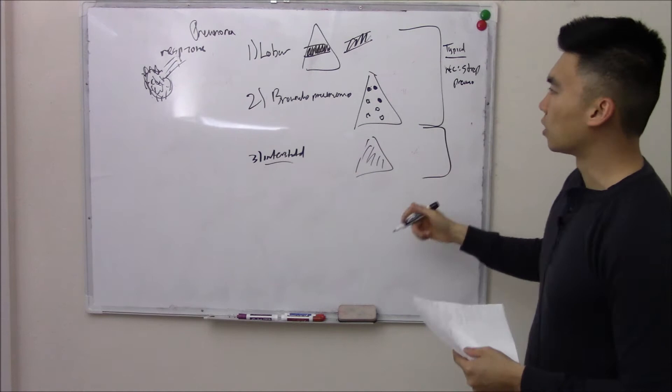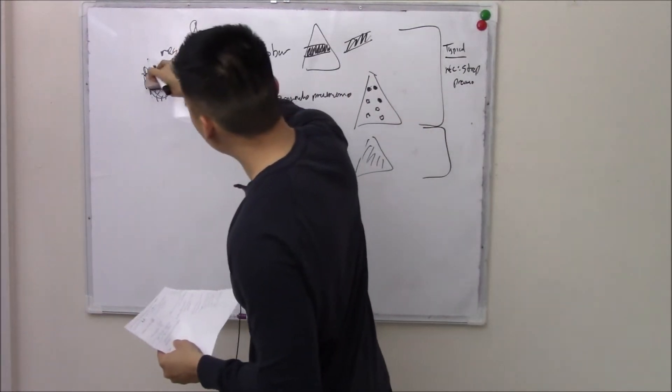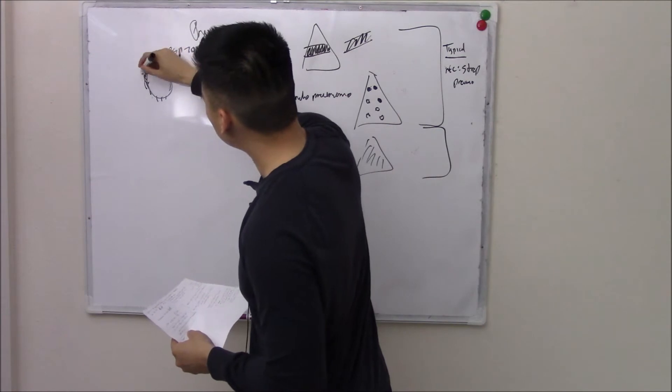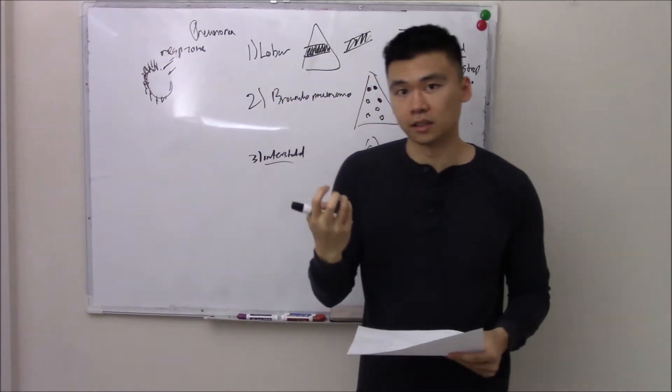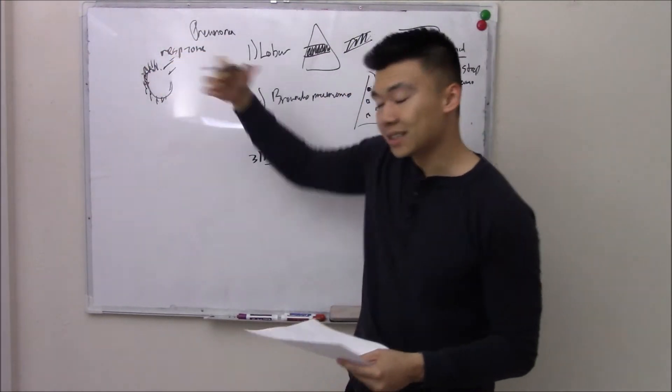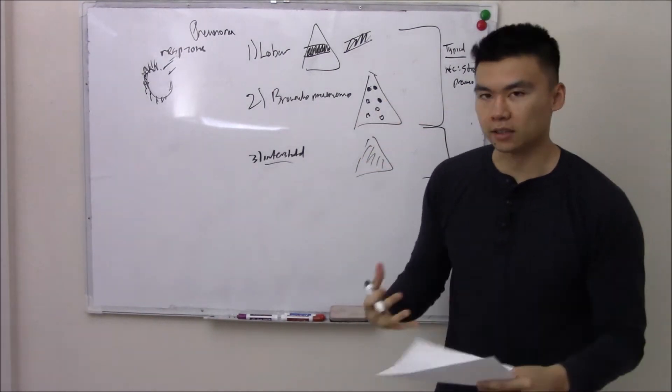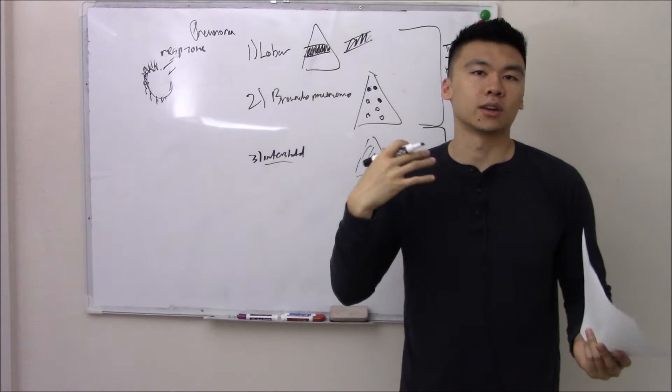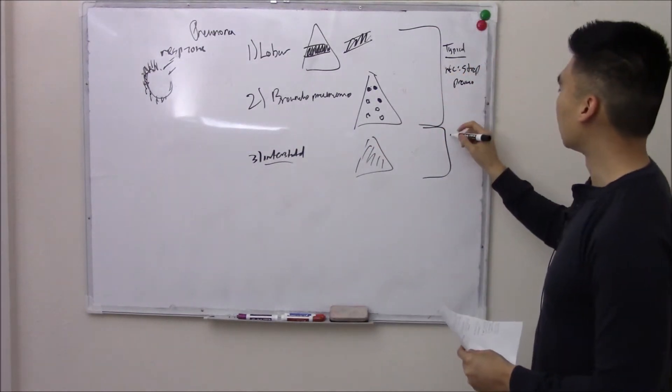Now the interstitial pneumonia affects outside your alveolar sac, not actually inside your alveolar sac. And because it doesn't affect inside your alveolar sac, you have a little bit milder symptoms. You can get away with a little bit more. So it'll be a little bit milder.